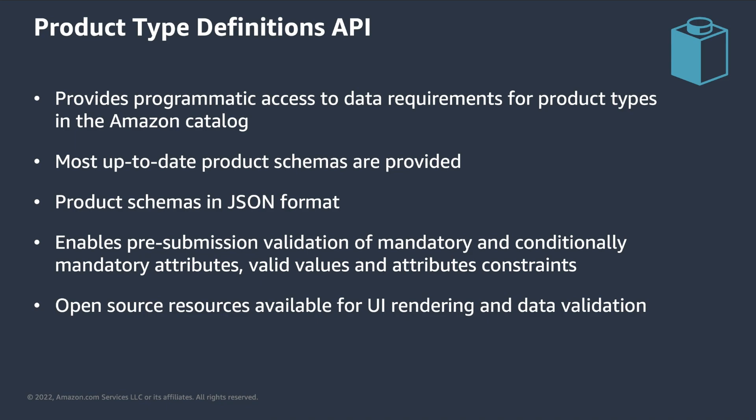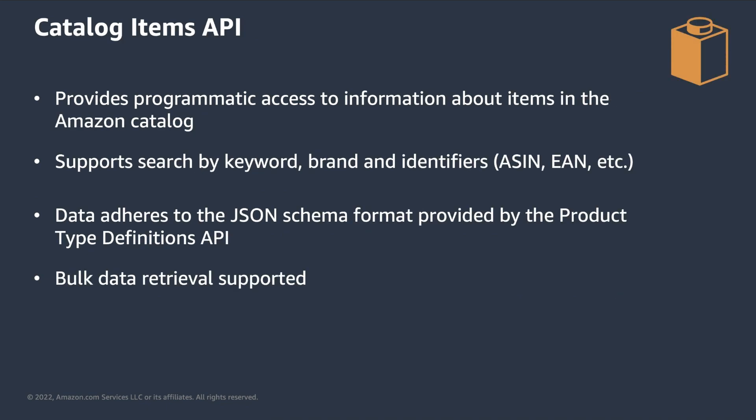The Catalog Items API provides programmatic access to information about items in the Amazon catalog. With it, you can query ASINs that belong to the Amazon marketplace and get the attributes associated to them. The API supports both direct queries — for example, using an ASIN or EAN — and searches using keywords. This way, you can retrieve a specific item if you know the identifiers, or use the API to check if an item exists, find similar products, etc.